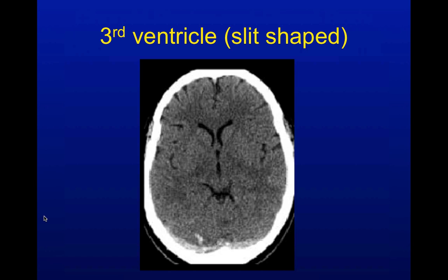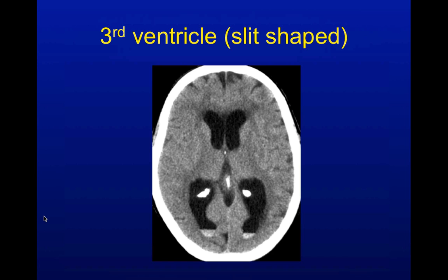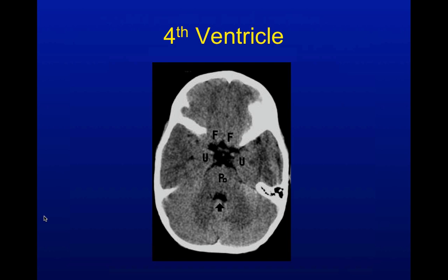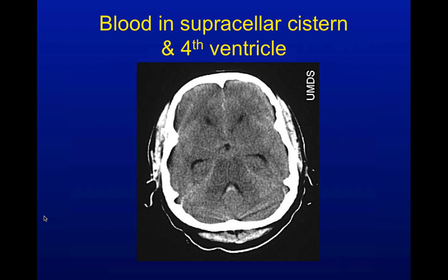The third ventricle is here in the center — kind of a keyhole slit, supposed to be nice and skinny, connecting the two lateral ventricles. That third ventricle is a little bigger than it ought to be — that's probably where they bled from, and it's layered out here on the posterior horns of the lateral ventricles. The fourth ventricle is down here, kind of helmet-shaped, as the CSF makes its way down toward the spinal cord. There's some blood down in the fourth ventricle. And where else do you see blood? The star — the supracellar cistern.